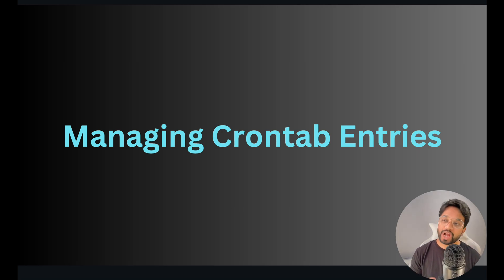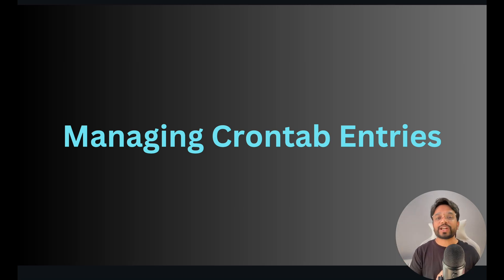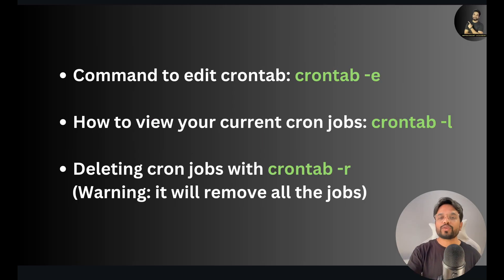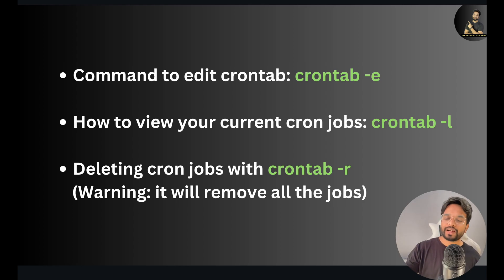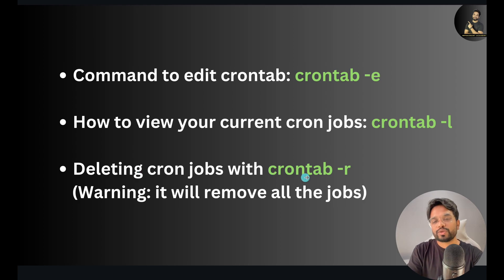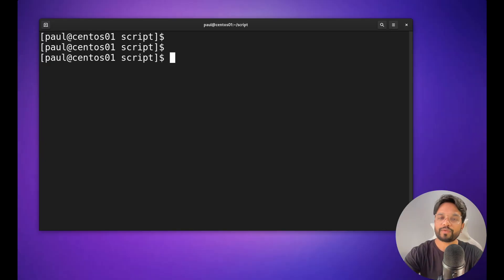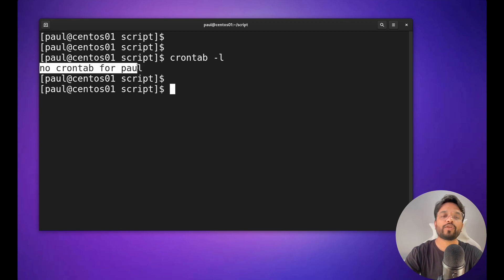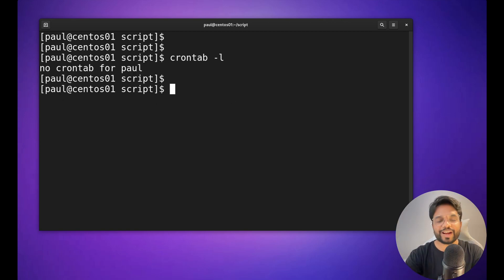Now let's see how to manage crontab entries — how to schedule tasks, view existing jobs, and remove jobs. We use the `crontab` command. To add or edit jobs, use `crontab -e`. To view existing jobs, use `crontab -l`. To delete all jobs, use `crontab -r` — but be careful, it removes all jobs at once. Running `crontab -l` now shows 'no crontab for paul', meaning the current user has no jobs yet.